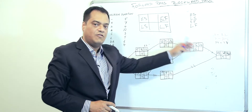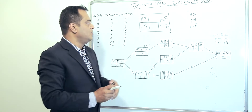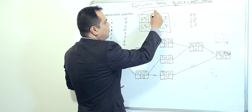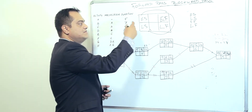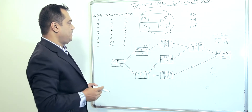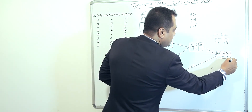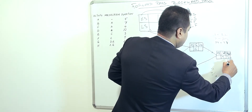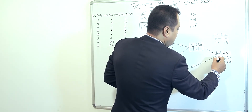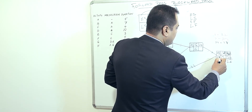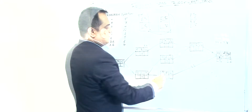Now let's do the backward pass. We go right to left to find latest finish and latest start. The longest path is thirty-two, so the latest finish for H is thirty-two. Thirty-two minus four is twenty-eight, which is the latest start for H. We carry twenty-eight back to both G and F.